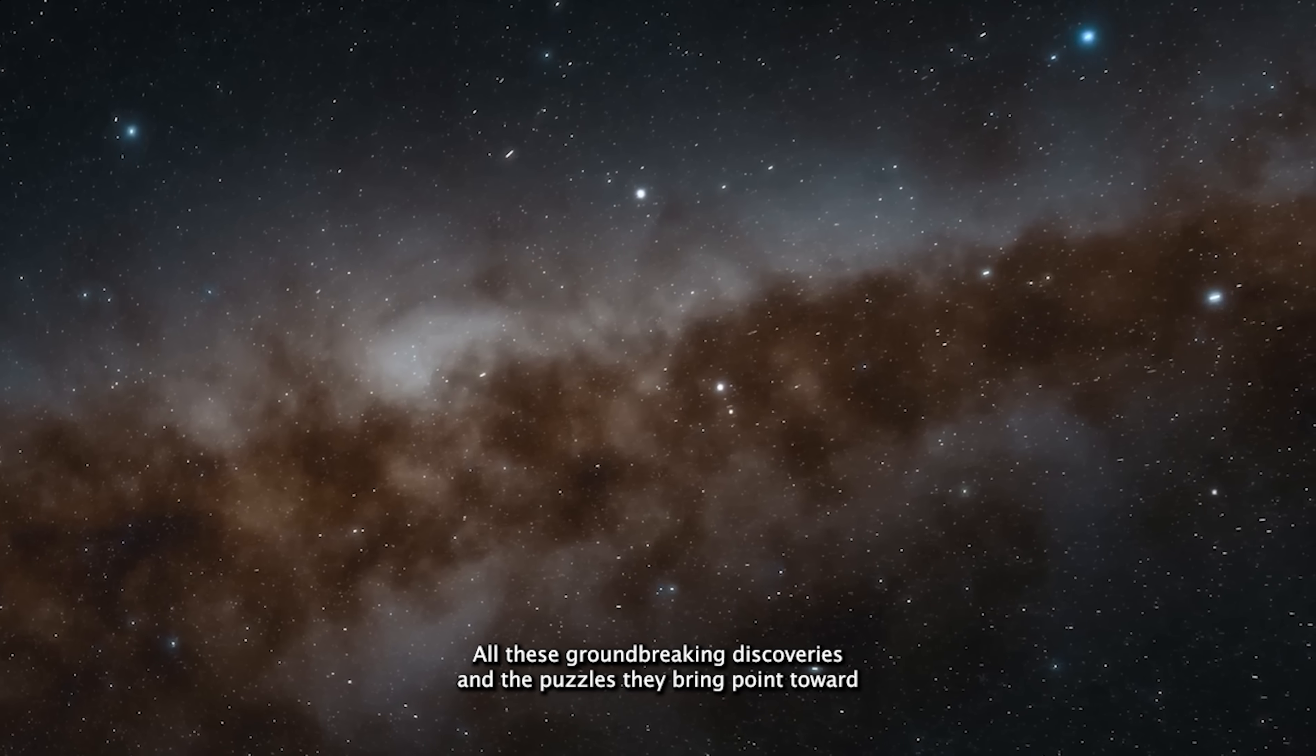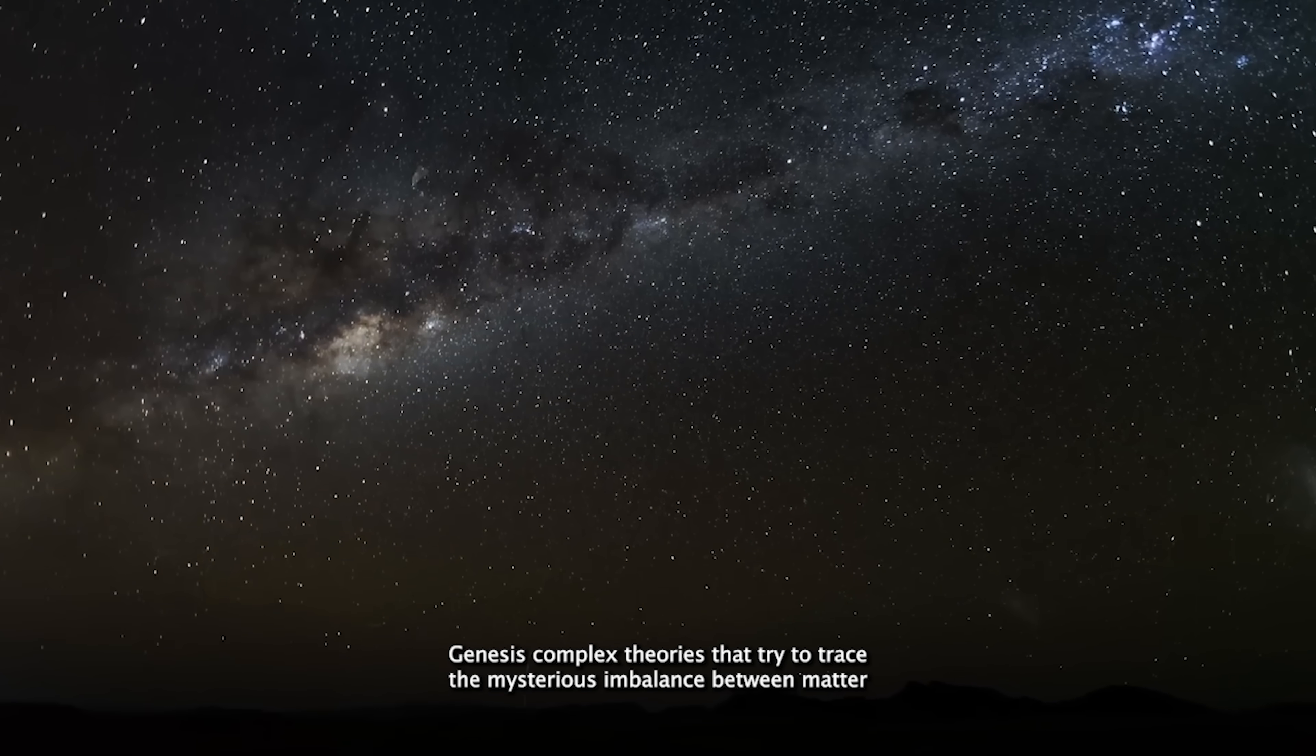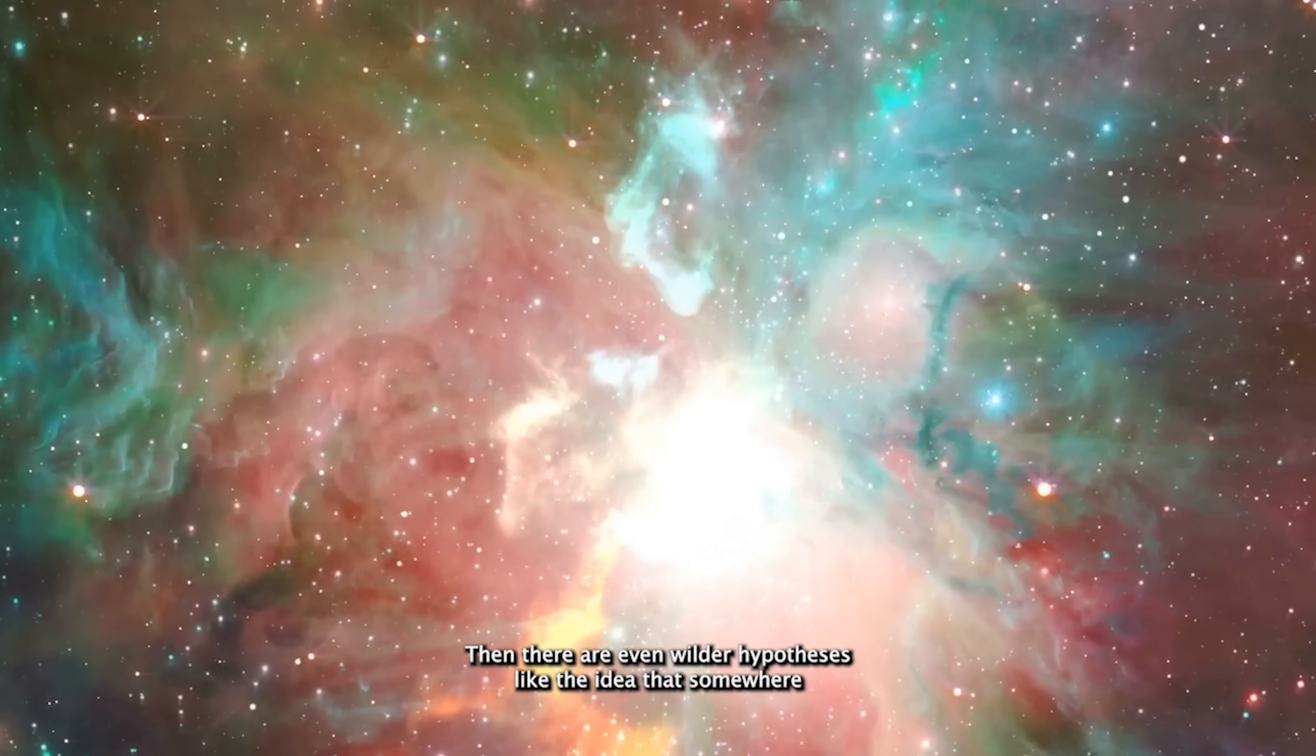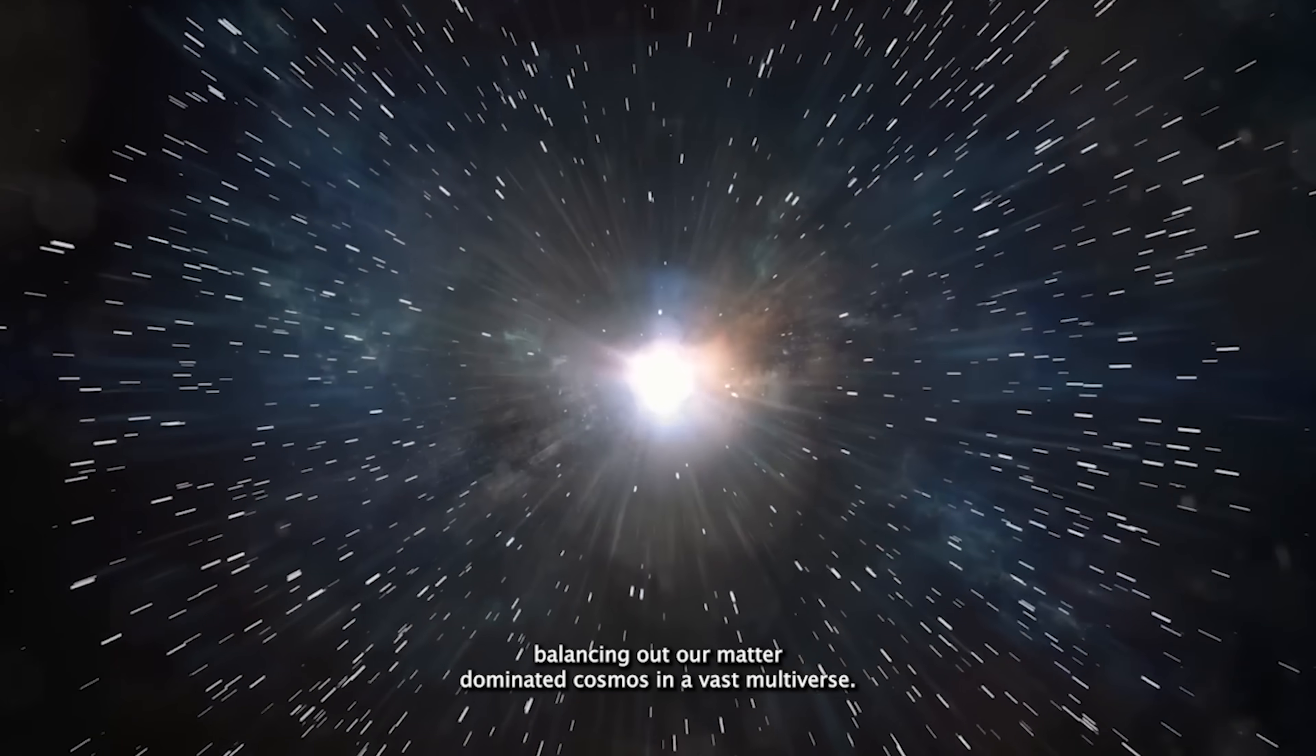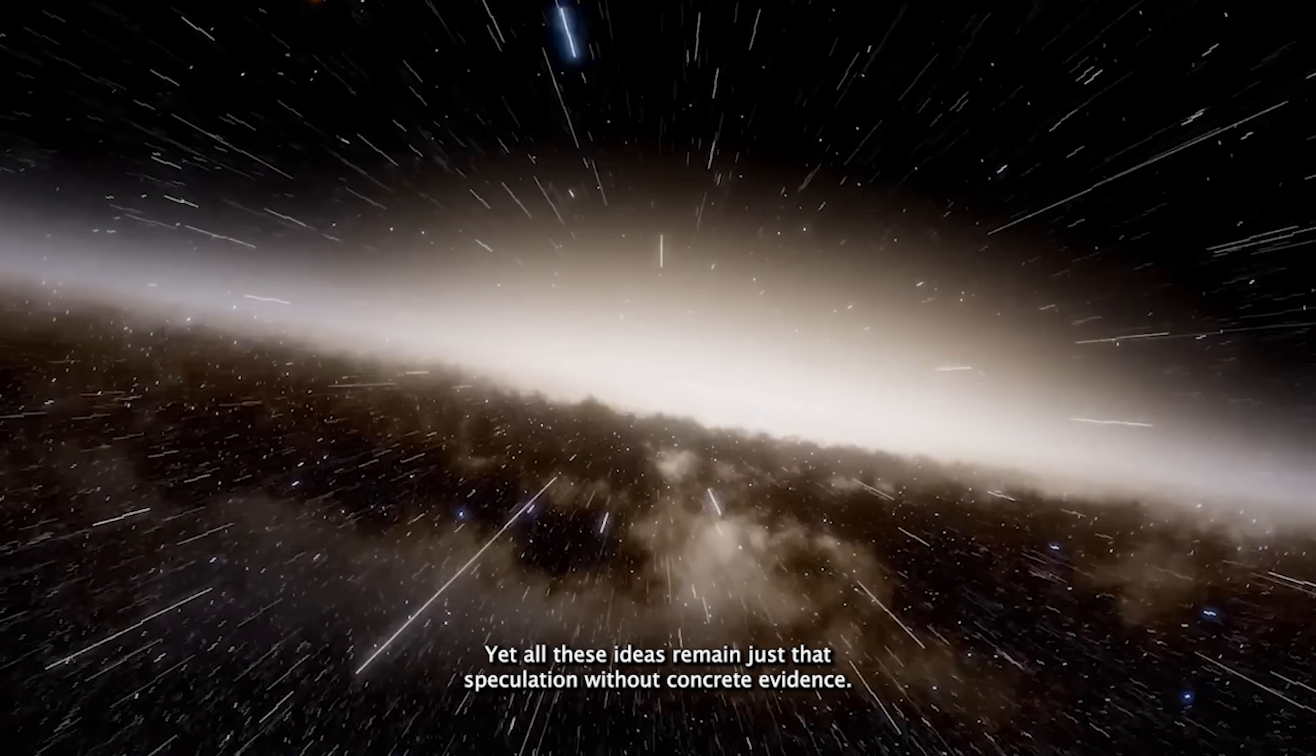All these groundbreaking discoveries and the puzzles they bring point toward unknown, unexplored corners of physics that we have yet to understand. Scientists have come up with intriguing ideas, like baryogenesis and leptogenesis, complex theories that try to trace the mysterious imbalance between matter and antimatter back to events just moments after the Big Bang. Then there are even wilder hypotheses, like the idea that somewhere out there in a parallel universe, antimatter reigns supreme, balancing out our matter-dominated cosmos in a vast multiverse. Yet all these ideas remain just that, speculation without concrete evidence.